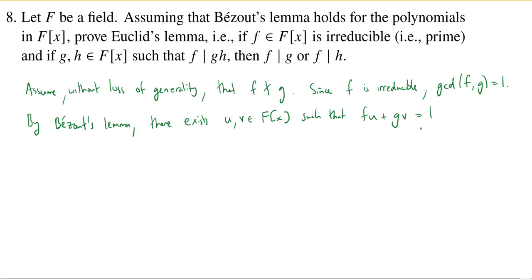Our goal is to show that f divides h, so what I'm going to do is multiply this equation through by h. So multiply by h and that will give us fuh plus gvh is equal to h.